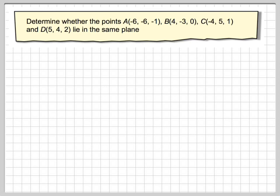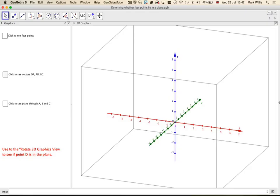So let's just have a look at this using GeoGebra for one minute. So here we have our axis. If we click to see the four points here, we can see the four points: A, B, C, and D. At first glance, they look like they might actually form a plane. So let's have a look at this algebraically to see exactly what happens.